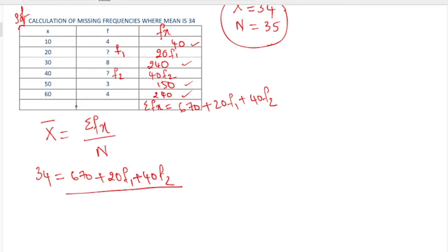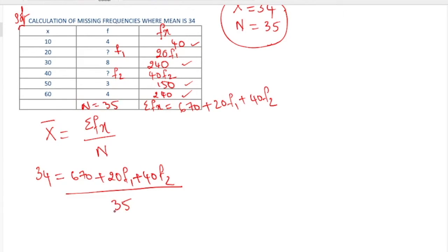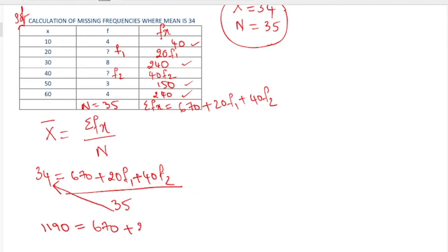Now, mean equal to summation fx by n gives us 34 equal to 670 plus 20f1 plus 40f2, divided by n which is 35. By cross multiplication, 35 into 34 is 1190, equal to 670 plus 20f1 plus 40f2.